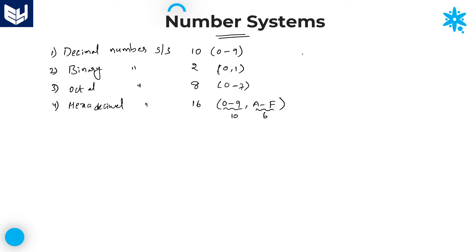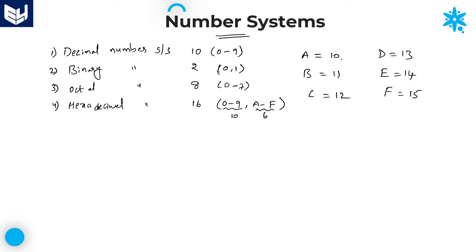Why do we use letters? Because A is represented as 10, B as 11, C as 12, D as 13, E as 14, and F as 15. If you represent A as 10, we might treat this value as 1 and 0 separately. That is the main reason we represent two-digit values onwards with letters. So the hexadecimal number system consists of total 16 numbers — from 0 to 9 and then A to F.